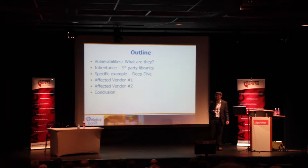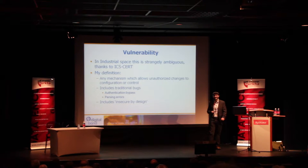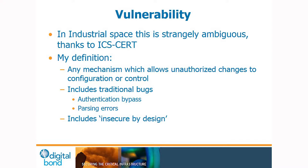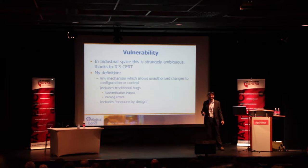We'll look at a few affected vendors and finally talk about what can be done. Vulnerability is a strange word in the industrial space because of ICS-CERT — the Industrial Control Systems Computer Emergency Response Team, based in the United States at Idaho National Labs. They unfortunately said vulnerabilities do not include insecure-by-design features of a product, so if something has no security built into its protocol, ICS-CERT decided they're not going to call that a vulnerability. My definition though is: a vulnerability is any mechanism that lets you do something with a system that was not intended — including traditional bugs like bypassing authentication and buffer overflows, but also insecure-by-design issues where there was no authentication in the system to begin with.